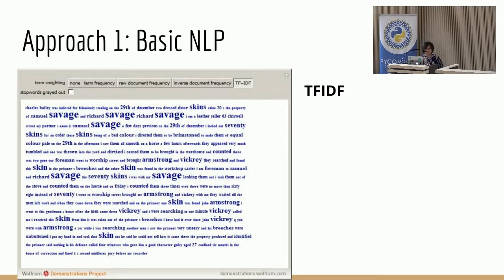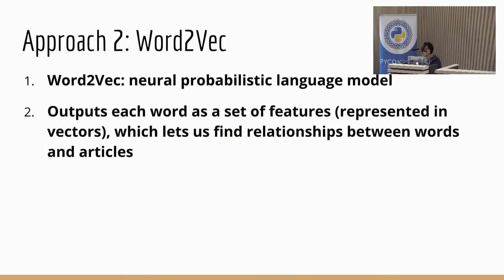You can combine TF-IDF with something like cosine similarity to determine which documents are more or less similar to each other. But that's a very simple approach. We did some evaluation and it didn't quite produce the similarity results we were interested in, so we moved on to another approach: Word2Vec.